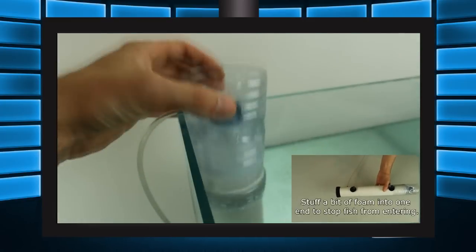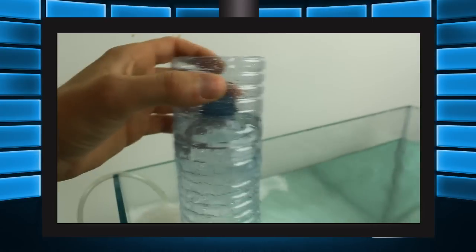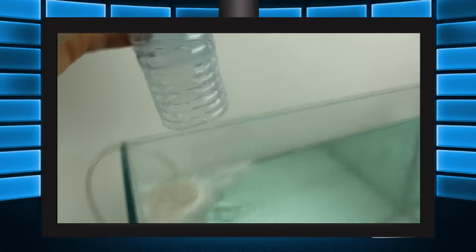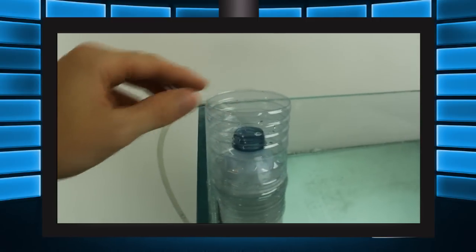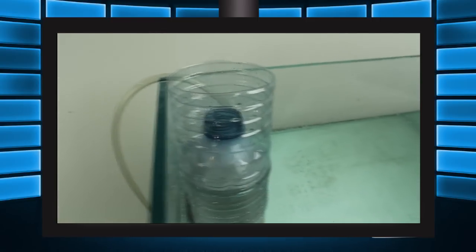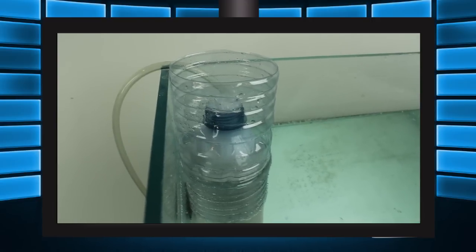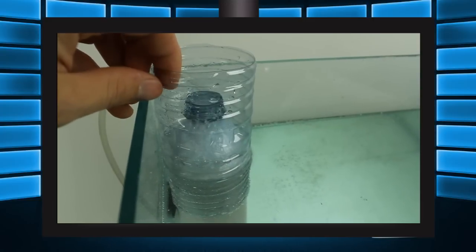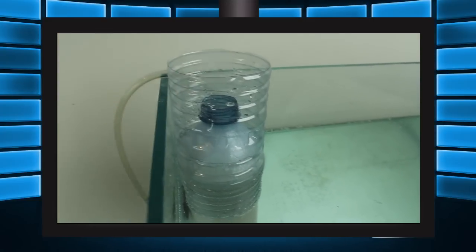To clean the skimmer, simply slide the collection cup off and pour the skimmate down the drain. So as the wooden air stone creates the tiny bubbles and those tiny bubbles rise, proteins attach to those bubbles and rise up through the pipe. As they reach the surface, foam begins to build up, and the more and more foam that builds, the higher up the neck of the bottle that foam is pushed, only to eventually overflow into the collection cup to be completely removed from the system.